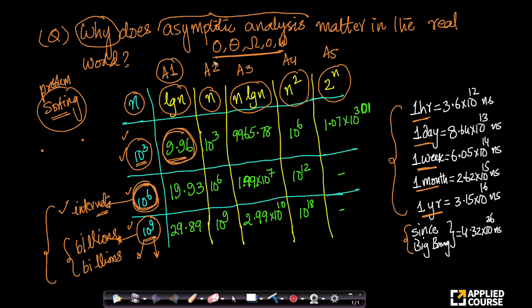Similarly, if I am using algorithm A2 which has time complexity order of n, if the input size is 10 power 3, I need to perform 10 power 3 operations. For algorithm A3 with time complexity n log n, for an input of size 10 power 3, I need to perform 9965.78 operations. I just filled this matrix and left two entries blank — I will tell you why.